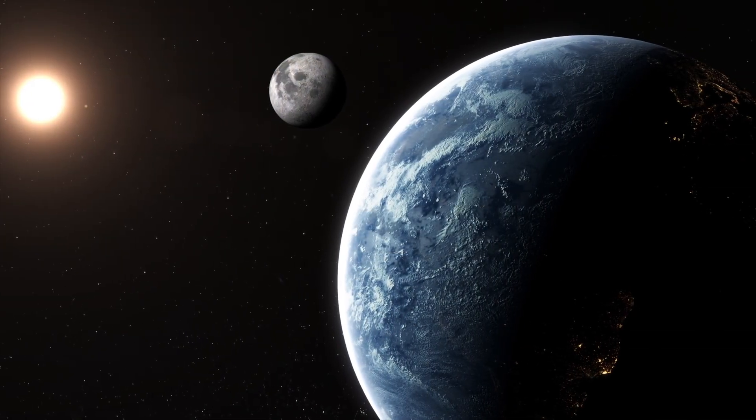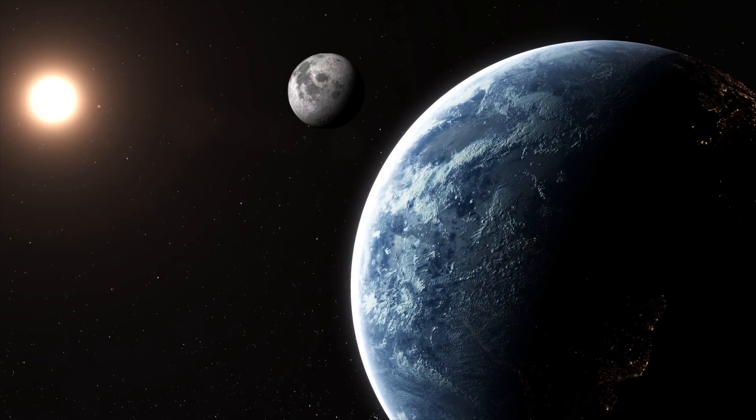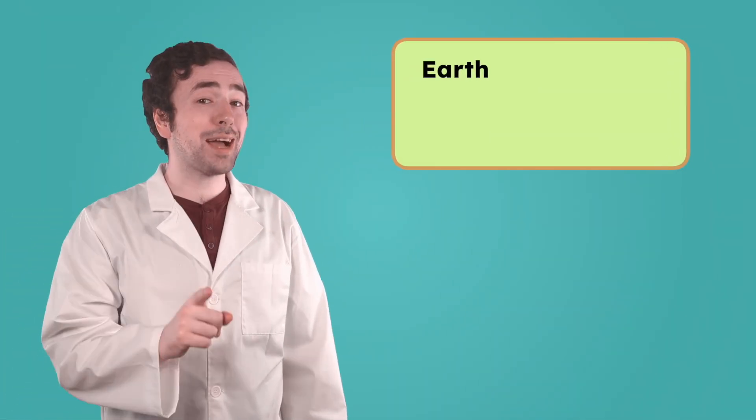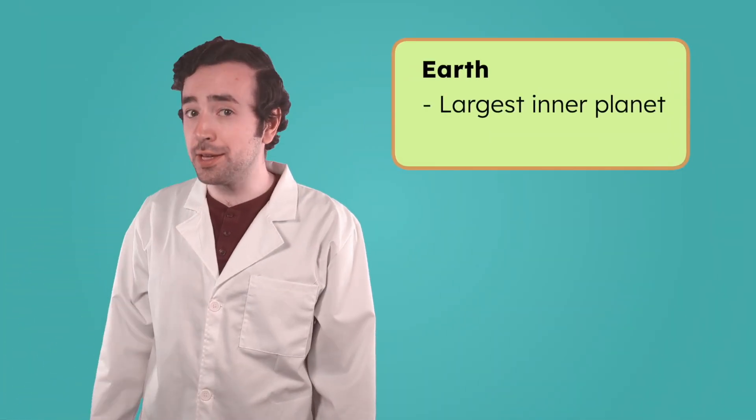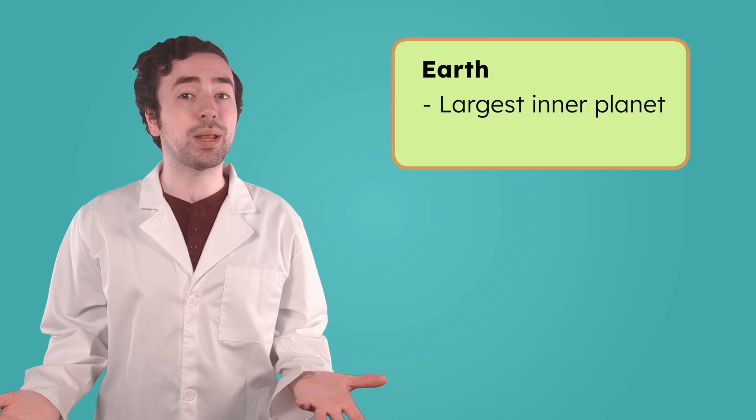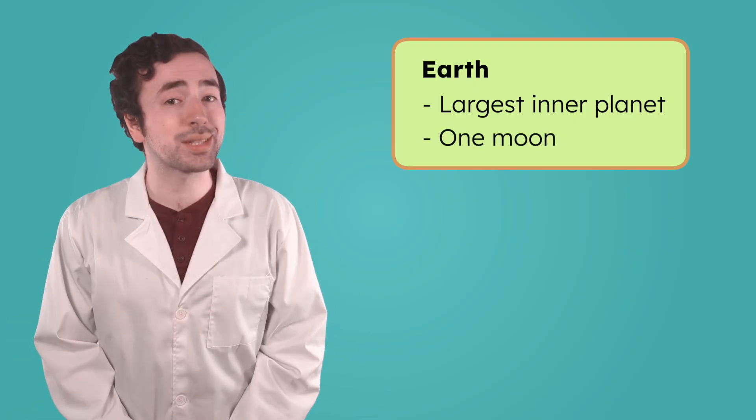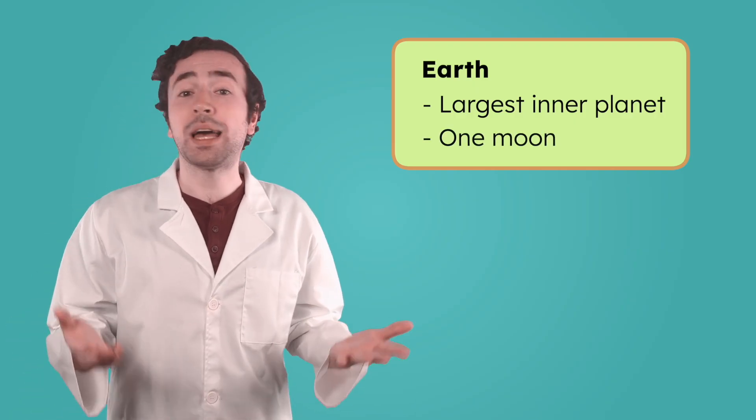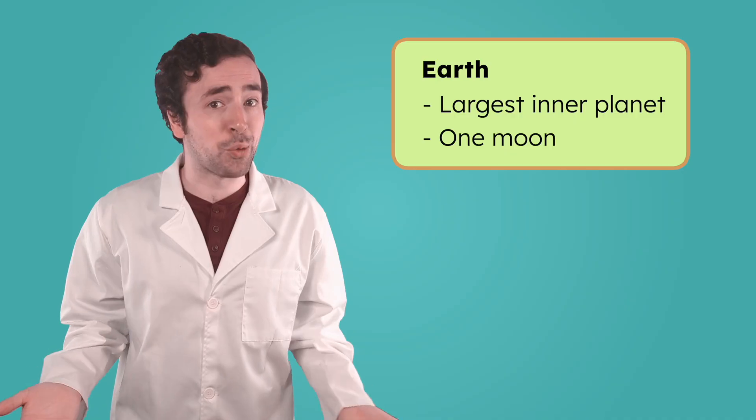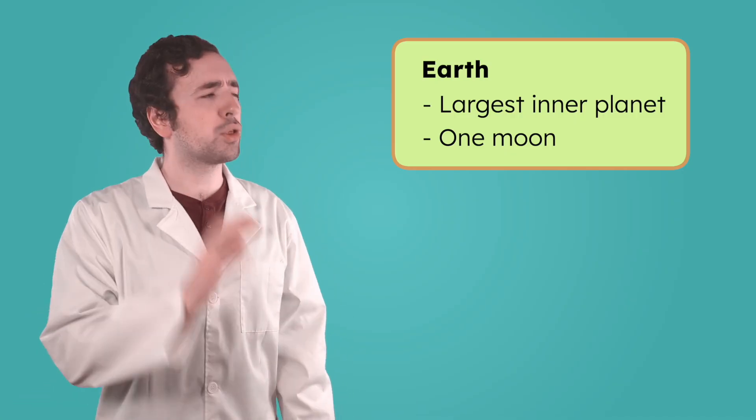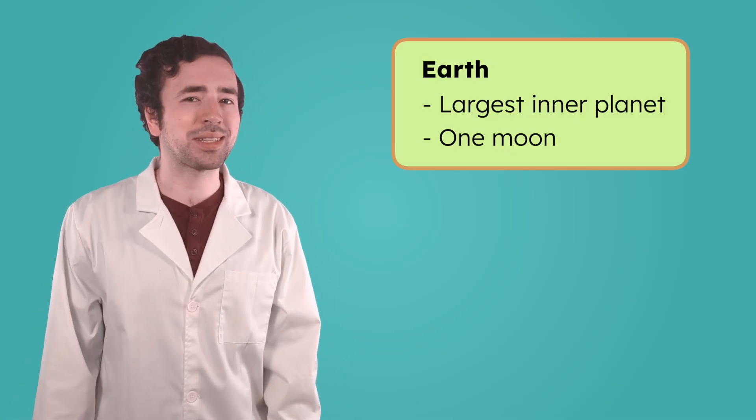Earth is the third planet from the sun and our home. Earth is actually the largest of the inner planets, and orbiting our planet is one natural satellite. The Moon! That's something that Mercury and Venus don't have. Earth's Moon is large, round, and easy to spot in our night sky.